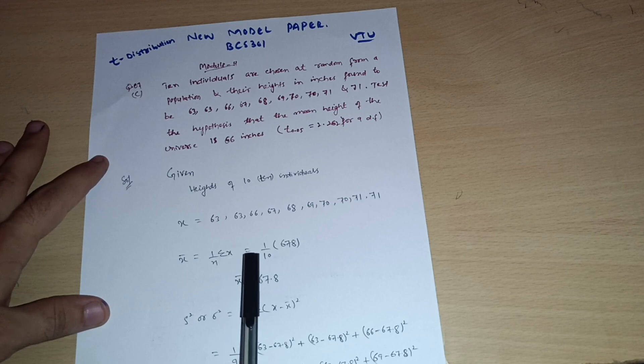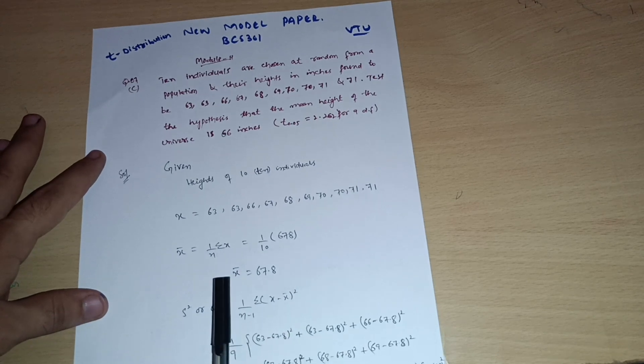is equal to 1 by n summation of x, which is equal to 1 by 10 summation of this much. When you just sum up you will get 678, so you will get x bar value as 67.8.